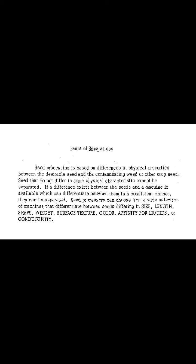Seed processors can choose from a wide selection of machines that differentiate between seeds differing in size, length, shape, weight, surface texture, color, affinity, liquids, or conductivity. These are physical properties. Seed separation is generally done on the basis of these physical characteristics. A single machine cannot separate seeds that differ in all these characteristics. In most instances, a different machine must be used to make separation based on each characteristic.